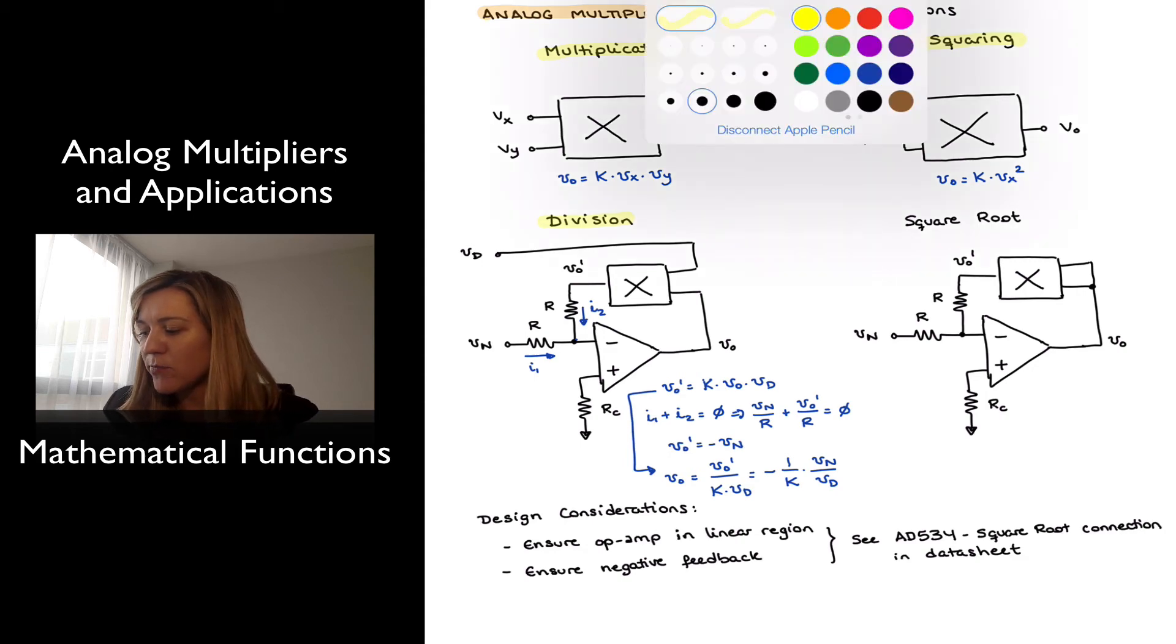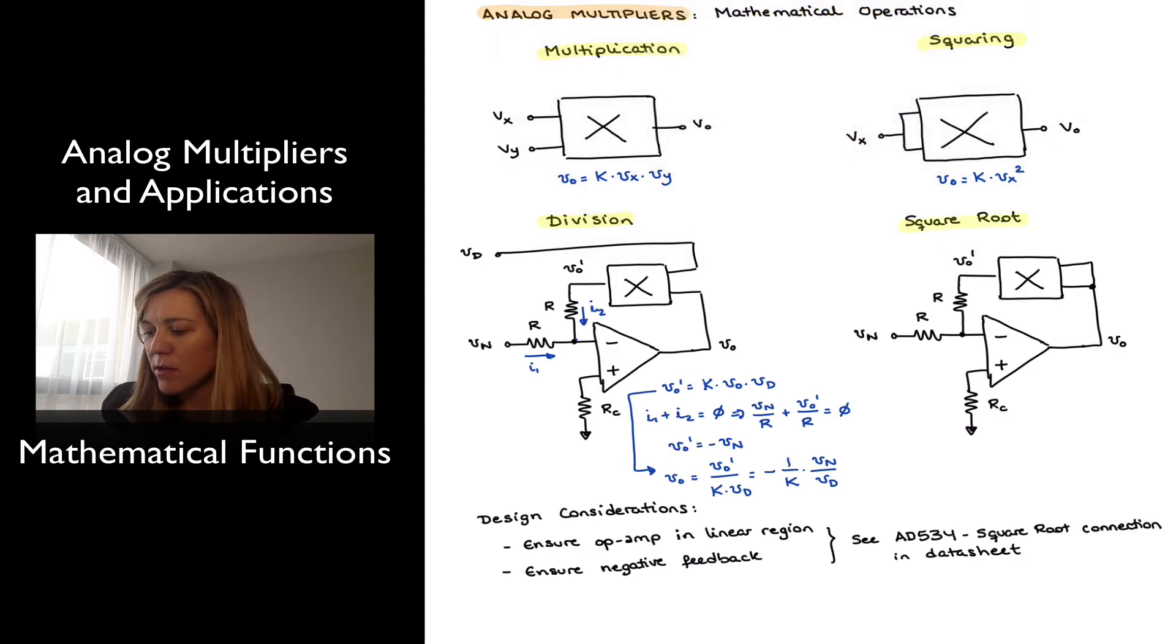And the square root operation is similar, a similar connection to the division, except notice that now I don't apply a denominator voltage, but rather the output of my op-amp is fed to both inputs of my analog multiplier.